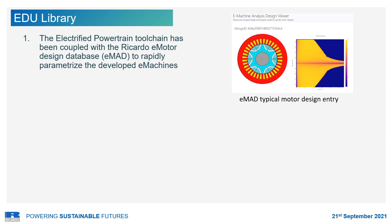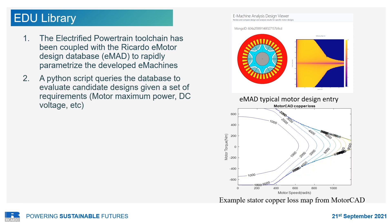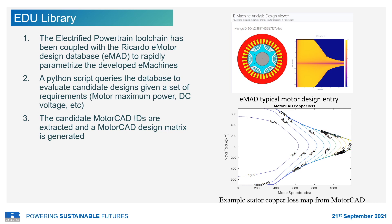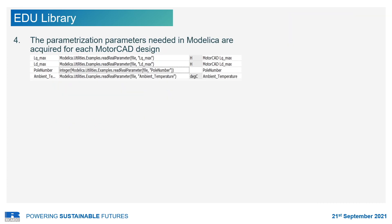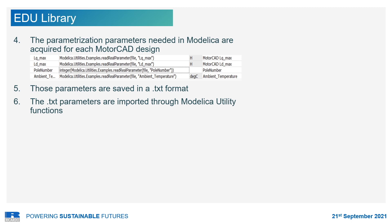The motor models are parameterized through an automated Python process. Specifically, the toolchain incorporating the presented libraries is coupled to the Ricardo eMotor database, also known as eMod. A Python script queries the database to evaluate a selection of candidate motor designs that fulfill a project-specific set of requirements, such as motor maximum power, DC voltage, maximum torque and speed. The candidates are extracted and a design matrix is generated. The MotorCAD IDs are used to extract the relevant motor parameters used to parameterize the Modelica models, which are saved in a TXT format and imported using Modelica utility functions.